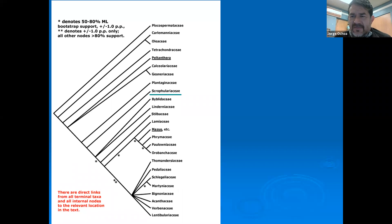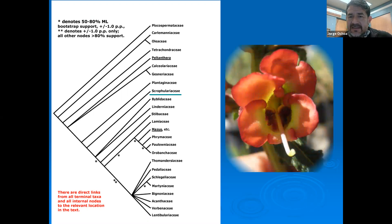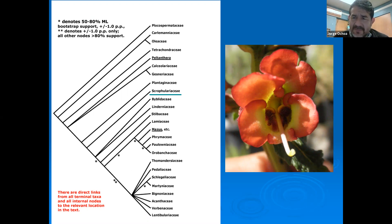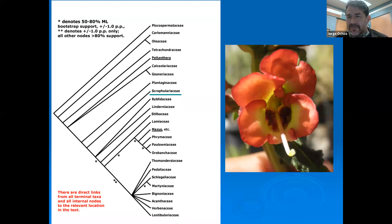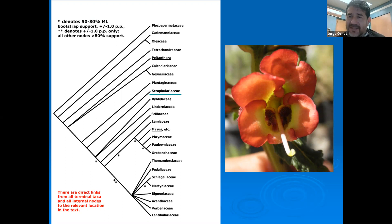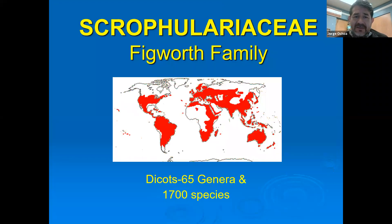Our family group is the Scrophulariaceae, known as the figwort family. Here is a typical flower that is not going to be too different from many other things we've seen — there's no real big specialization, nothing that makes it a very unique flower. By flower alone it will be a little bit difficult to identify the members, but since the family is small it's a good idea to know the genera and trace those back to the family.